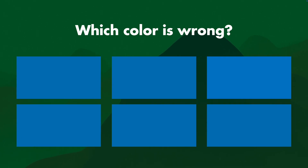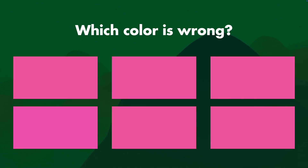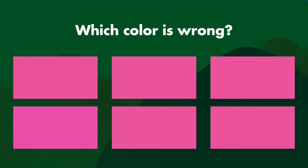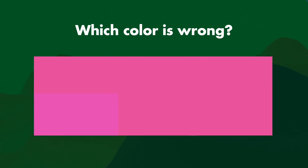It's the one in the top right — the white is slightly off from the other ones. Let's do another one. Which color is wrong out of these six squares? Take a look at it. It's the one in the bottom left.